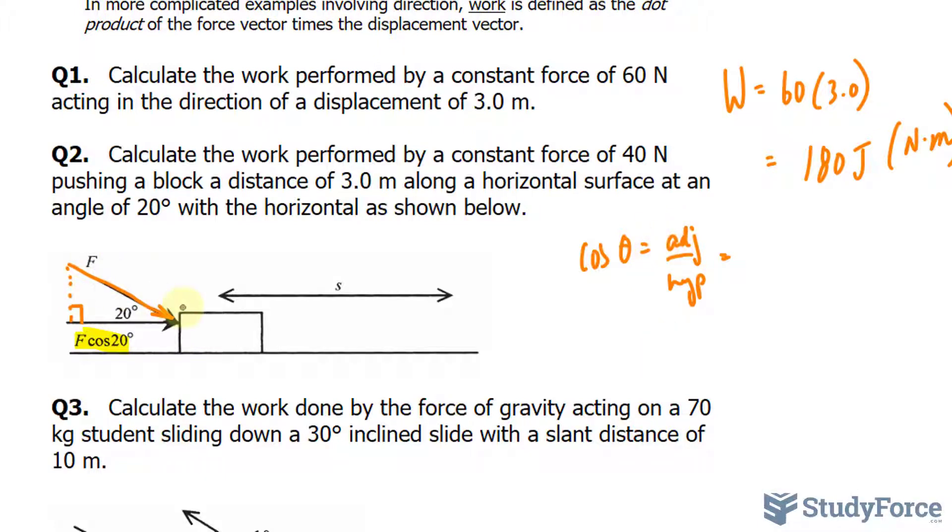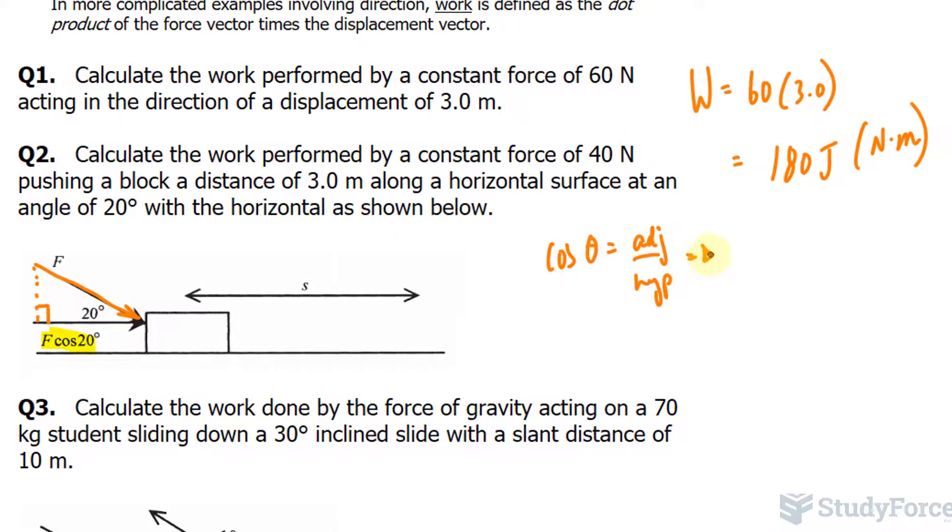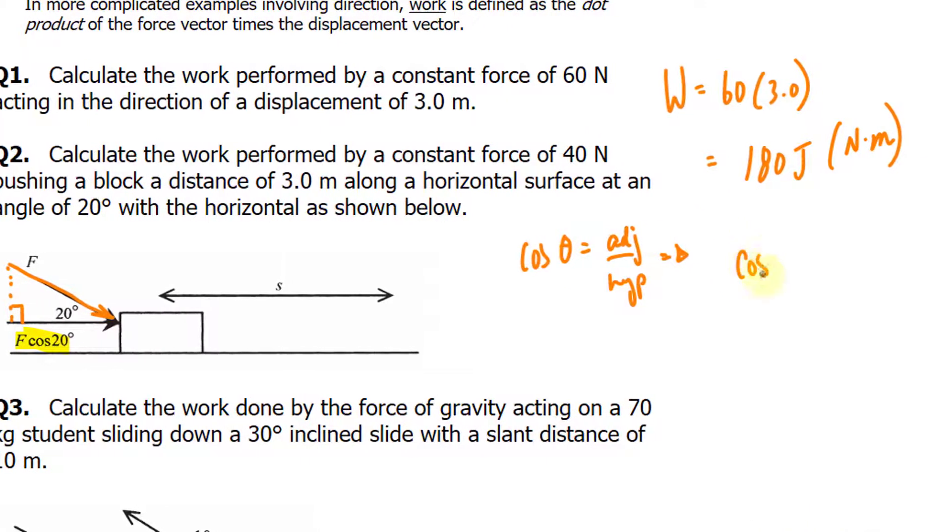So I will write this down as cosine 20 degrees equals ADJ over the hypotenuse of 40 newtons. Multiplying both sides by 40 gets rid of 40 at the bottom, and this is where this expression comes from.